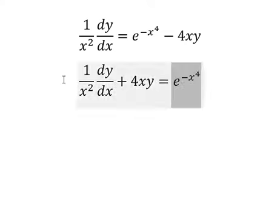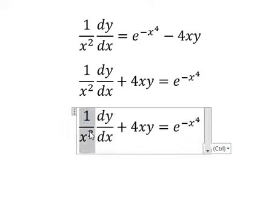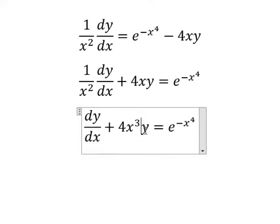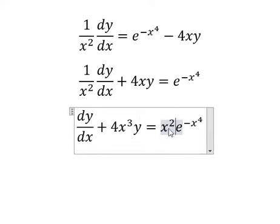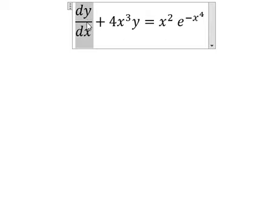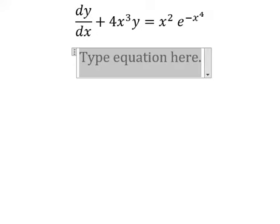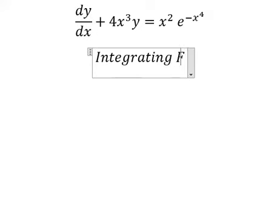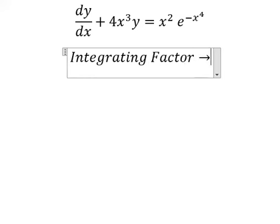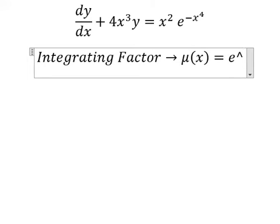Next we multiply both sides by x squared. Next we have y, and first the derivative of y. So we can use the integrating factor. We need to find μ(x) equals e to the power of the integration.